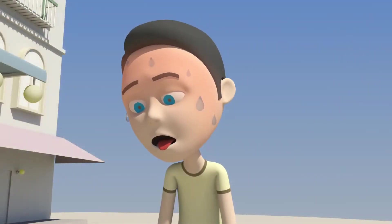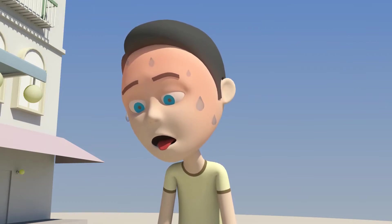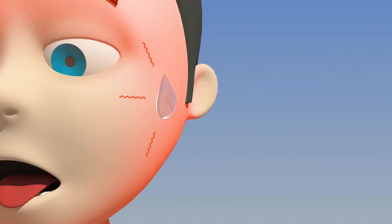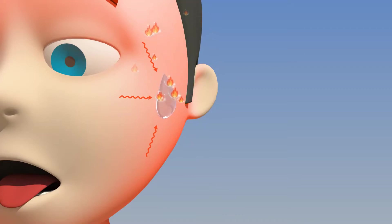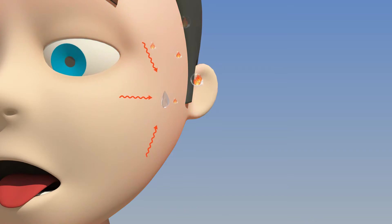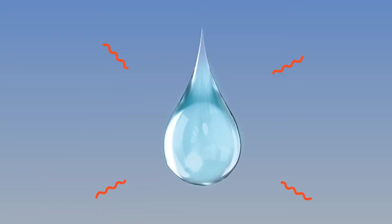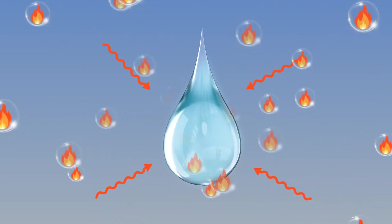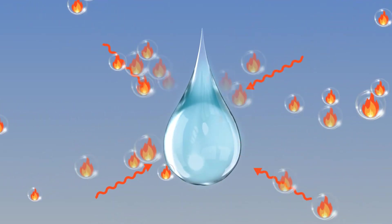We sweat when the weather gets warm, as sweat cools down our temperature. This is because sweat takes heat away from our skin as it evaporates. When liquid evaporates and takes heat away from the surroundings, it is called latent heat of vaporization. The bigger the latent heat of vaporization, the more heat it takes away.